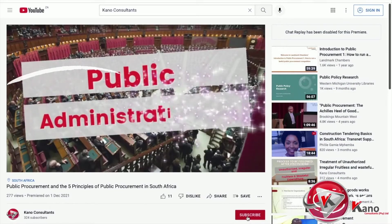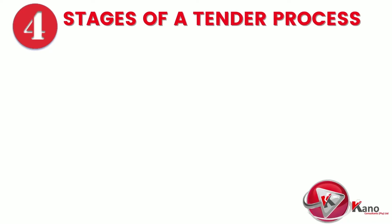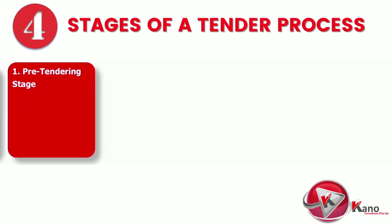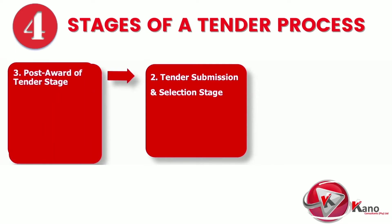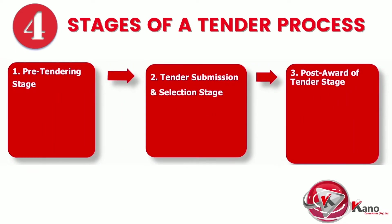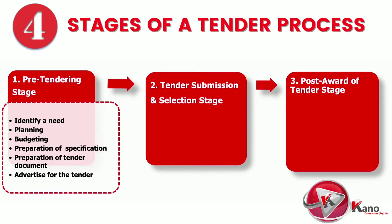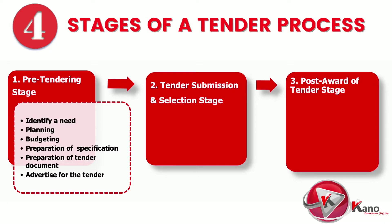It is important to know that the tender process is normally divided into three main stages: one, the pre-tendering stage; two, the tender submission and selection stage; and three, the post-awarding stage. Under the first stage, government officials identify the need for a service, item, or asset, then plan and budget for that need, prepare a tender specification and the actual tender invite, which is then advertised on a public forum.